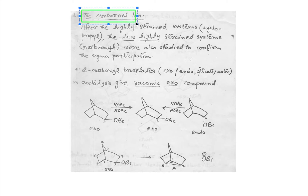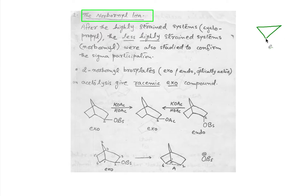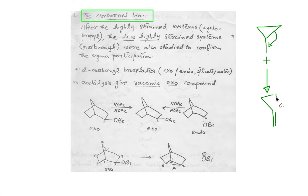Sigma participation in the norbornyl system is the focus here. We already discussed sigma participation in highly strained cyclopropyl rings, where C-C hyperconjugation and relief in ring strain lead to formation of a carbocation with enhanced stability. We also discussed pi participation in the norbornyl system, where pi electrons between carbon 5 and 6 remotely assist in stabilizing the carbocation by producing a non-classical carbonium ion.